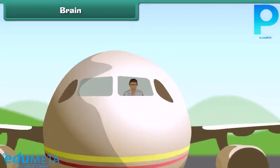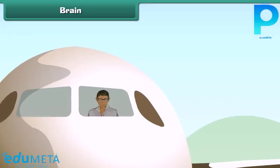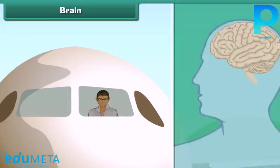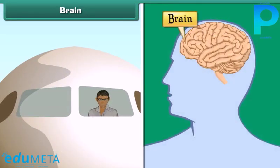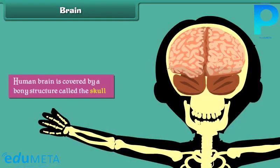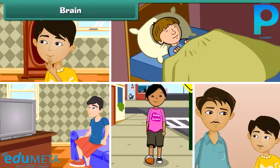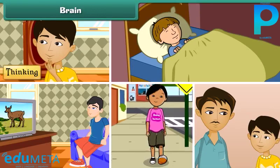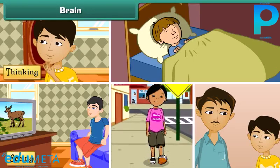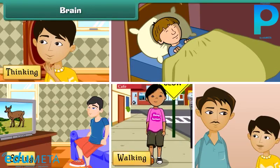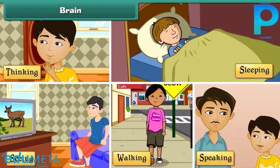Just as the pilot is the boss of an airplane in flight, the human brain is the boss of the human body. The brain is covered by a bony structure called the skull. The brain controls all the activities of the human body, such as thinking, seeing, walking, speaking, and even sleeping.